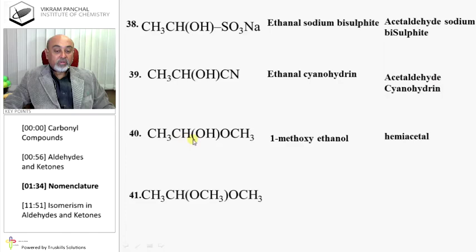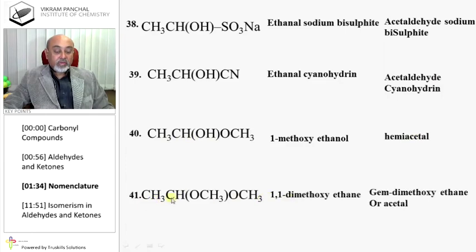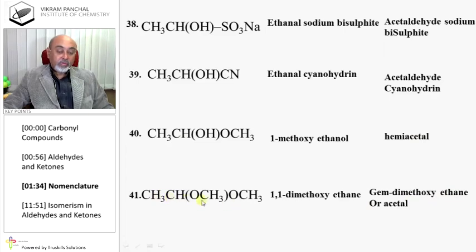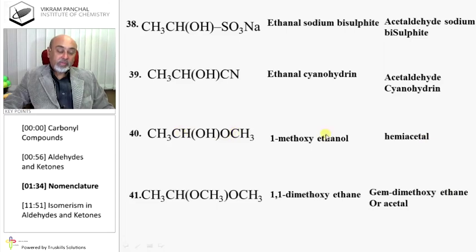This is 1-methoxyethanol, or a hemiacetal. Here it is 1,1-dimethoxyethane, or gem-dimethoxyethane, also called an acetal. An acetal means two ether groups on the same carbon. A hemiacetal means one OH group and one ether group on the same carbon.